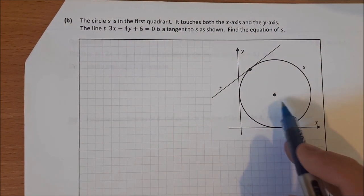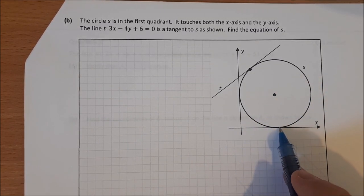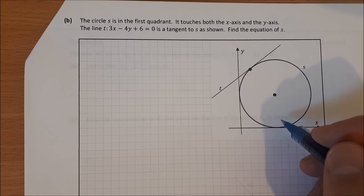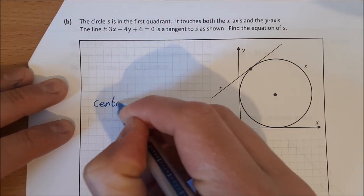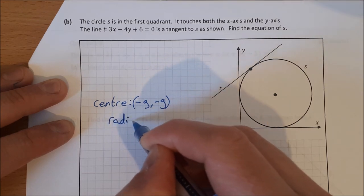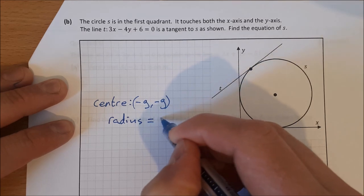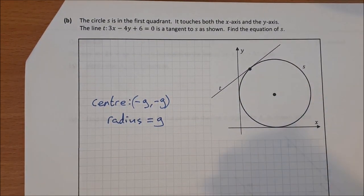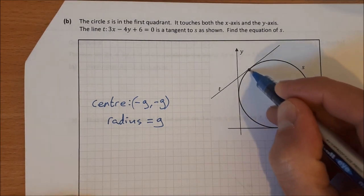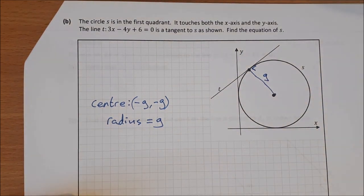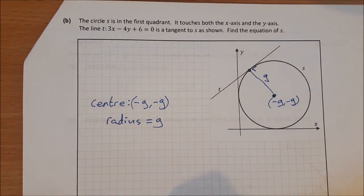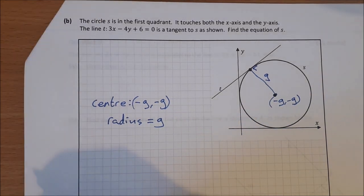If a circle in the first quadrant touches both axes, using the general form, the center is (−g, −g) and the radius is g. The perpendicular distance from the center to the tangent line equals the radius g, measured from the point (−g, −g).